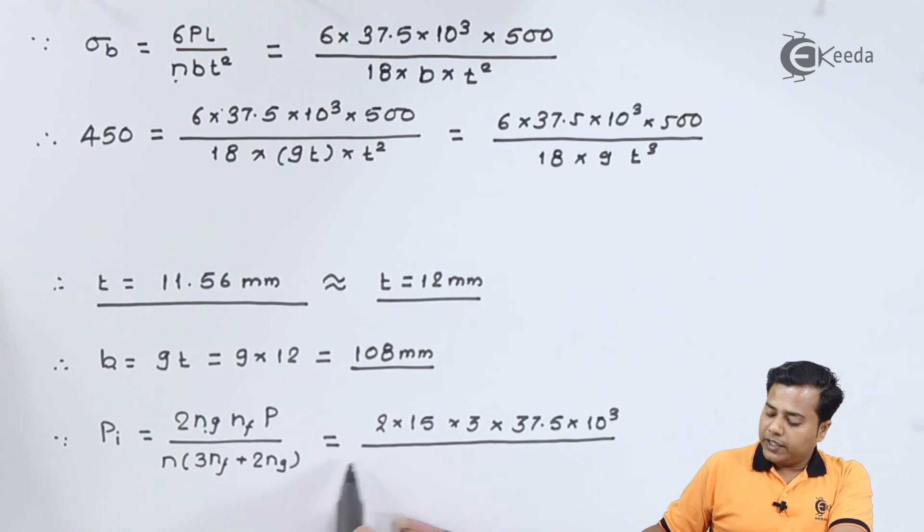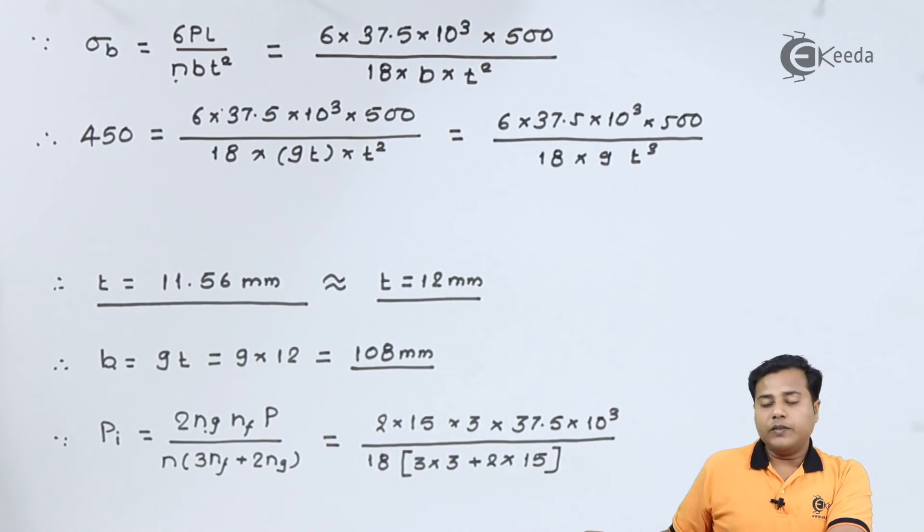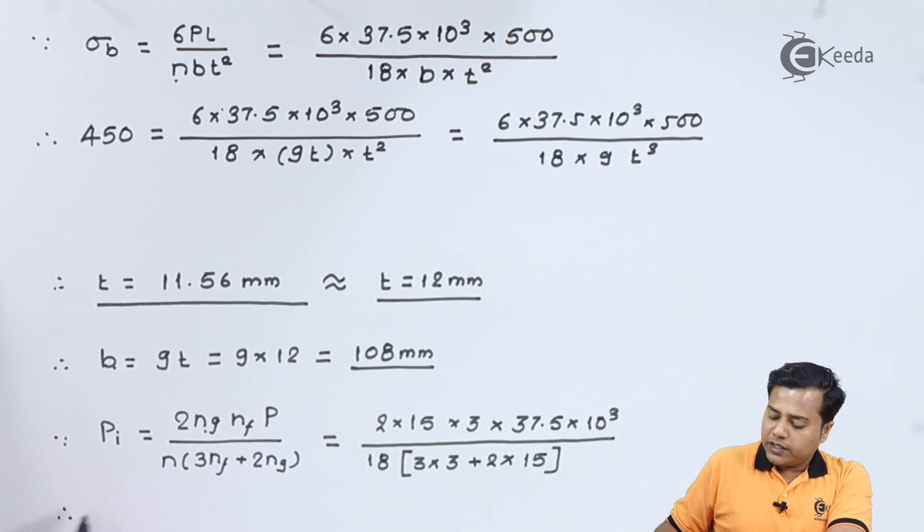Let us substitute the total number: 3 times the full length which is 3 again plus 2 times the graduated which is 15. So after solving this expression we will get P_i is equal to the calculated value.